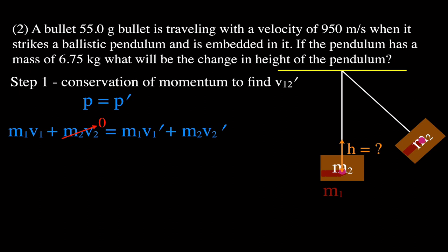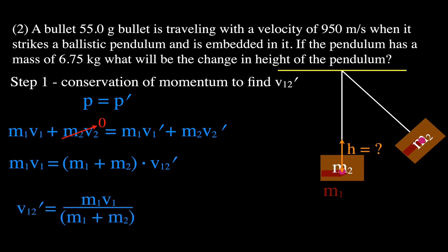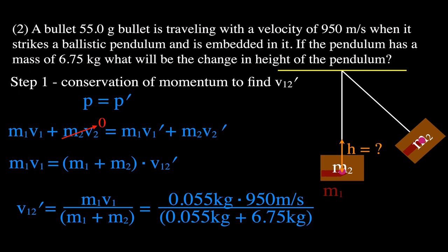V12 equals M1V1 divided by the sum of the masses (M1 + M2). The bullet was 55 grams, converted to kilograms, with initial velocity 950 m/s. Dividing by the sum of the bullet mass and the 6.75 kg pendulum mass, we find that the velocity of the bullet-pendulum system right after the collision is 7.68 meters per second.